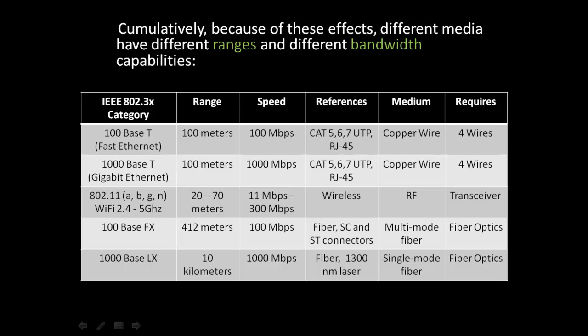Finally, the last row is 1000BaseLX. It has a range of 10 kilometers and a speed of gigabit, or 1,000 megabits per second. It's also referenced as fiber. It uses a 1300 nanometer laser, employs single-mode fiber instead of multimode fiber, and requires fiber optics.